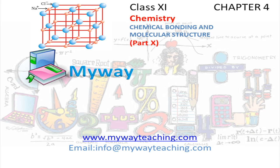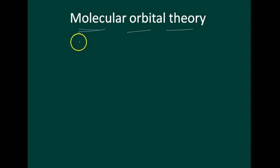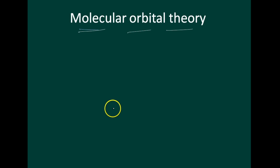This video is brought to you by mywayteaching.com. The next topic is molecular orbital theory. Molecular orbital theory was developed by F. Hund and R.S. Mulliken in 1932.